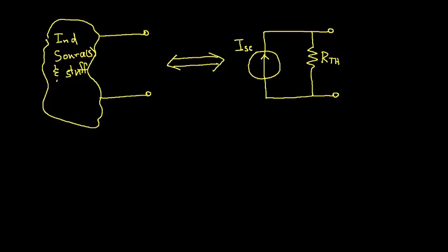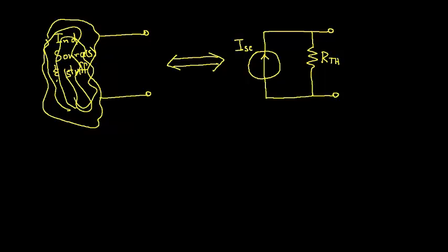The idea is that this whole blob of stuff — all of this stuff in here — is equivalent to a single current source in parallel with a resistor. Now this is very similar to the Thevenin equivalent, where all of this stuff over here was equivalent to a voltage source in series with a resistor.